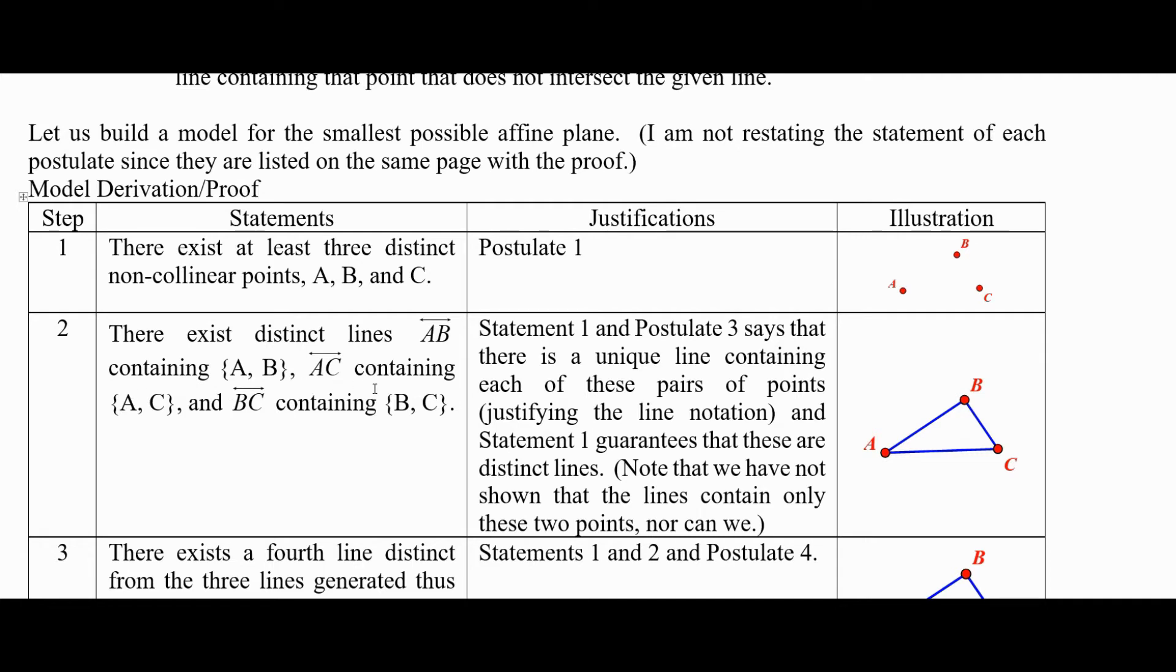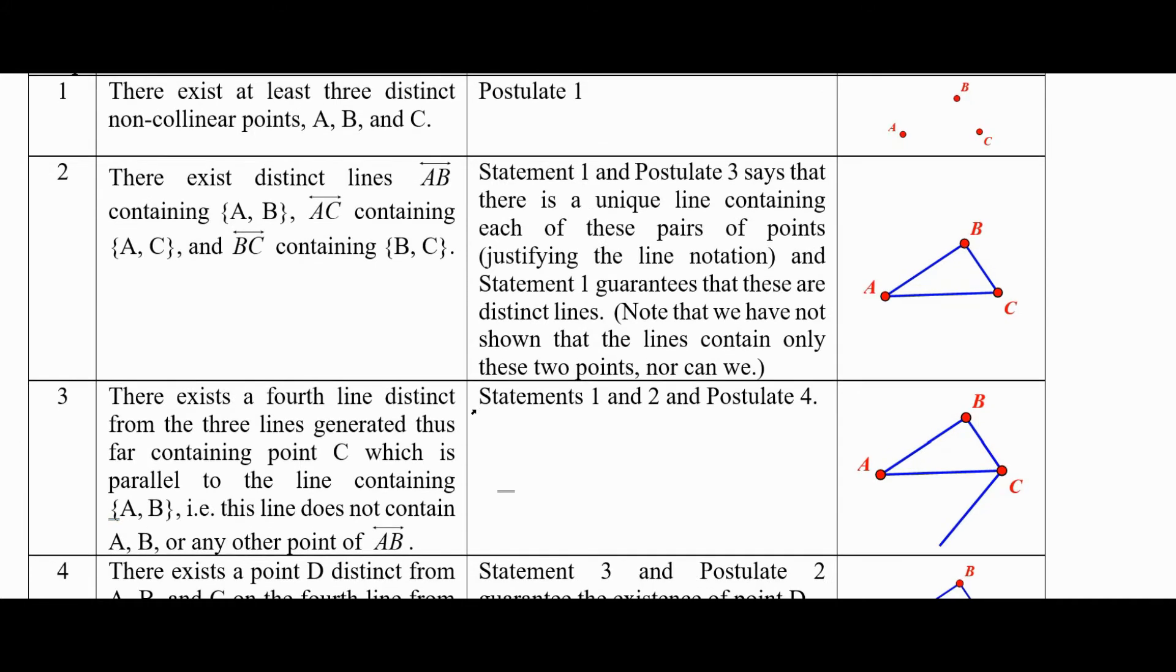We're not going to show that these are the only two points on the line. It turns out we're going to find a minimal model where they are the only two points on the line, but there might be more than two or even infinitely many like in Euclidean geometry, which satisfies these postulates as well.